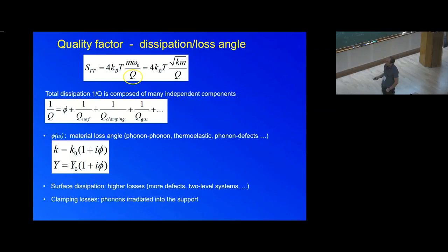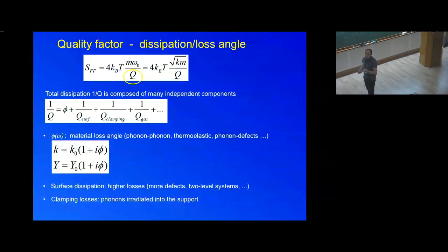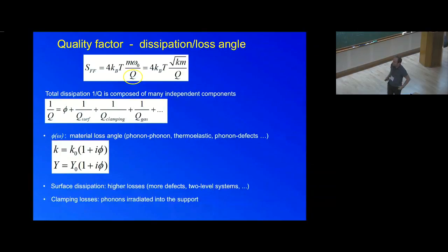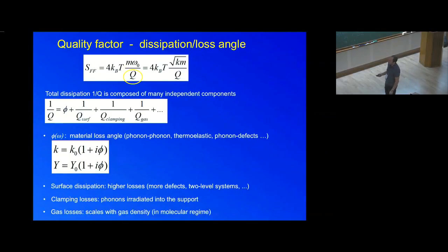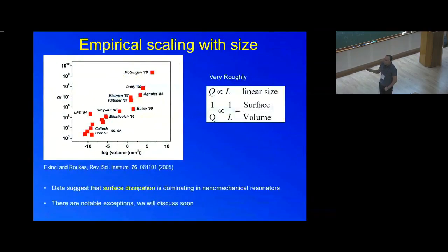Then you have clamping losses — any mechanical system attached to a support has some kind of energy leakage into the substrate. You also have gas losses, which are important but can in principle be reduced as much as you want by doing very good vacuum.